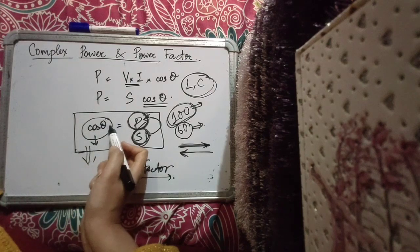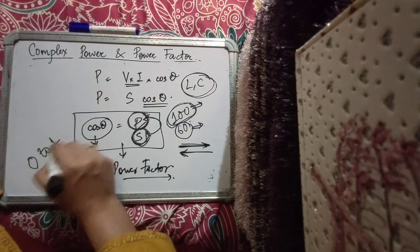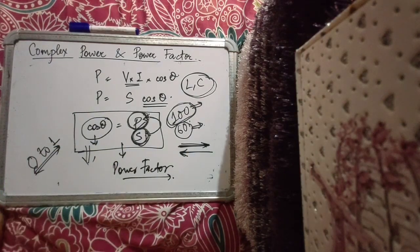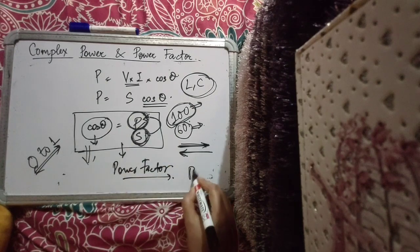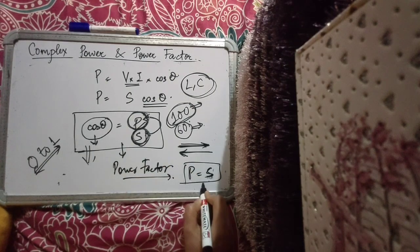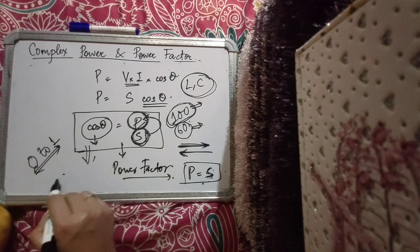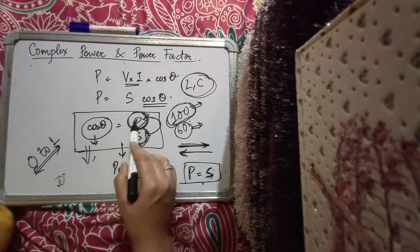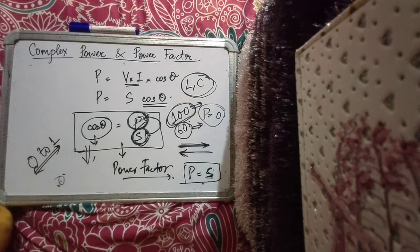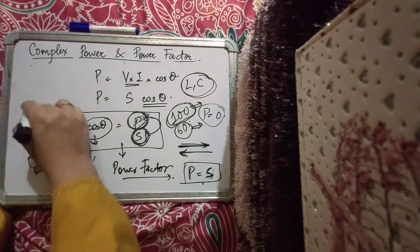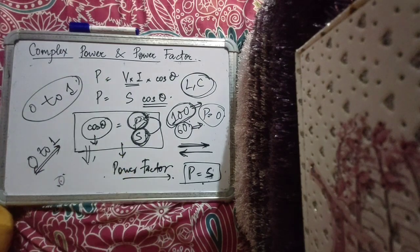Power factor is a cosine value so it ranges from 0 to 1. A power factor of 1 means real power equals apparent power — the circuit has only resistance. A power factor of 0 means P = 0, so the circuit has only L, only C, or an L-C combination. Values between 0 and 1 indicate combinations of R with L or C.